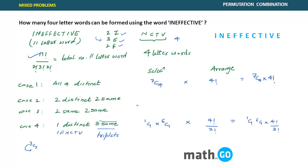So the answer for case four is 1C1 × 6C1 × 4!/3!. Now for case two — two distinct and two same. For the two same, we ask: how many pair options are available? There are two I's, two E's (taken from the three), and two F's — three pair options total.